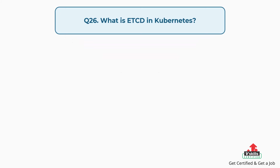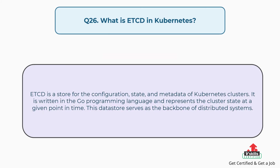Question number twenty-six: What is ETCD in Kubernetes? ETCD is a store for the configuration, state, and metadata of Kubernetes clusters. It is written in the Go programming language and represents the cluster state at a given point in time. This data store serves as the backbone of distributed systems.